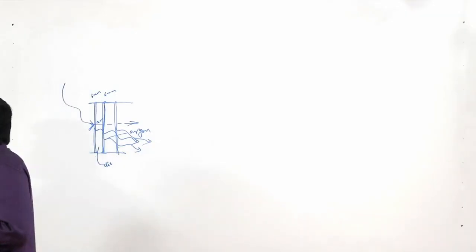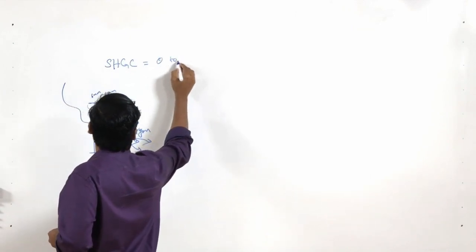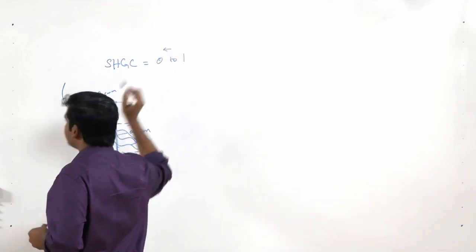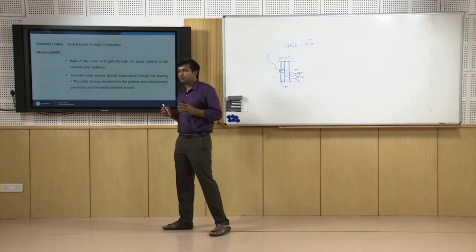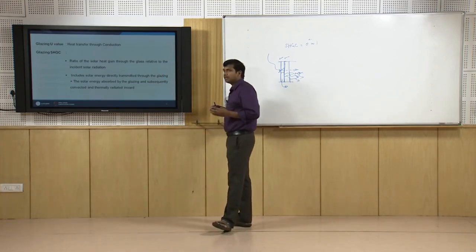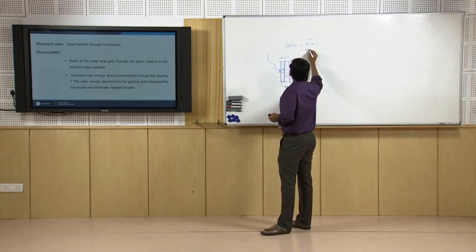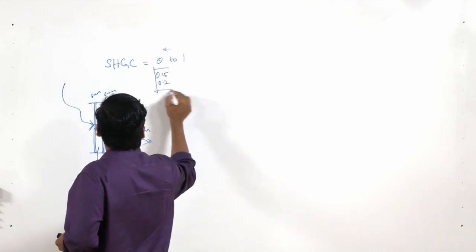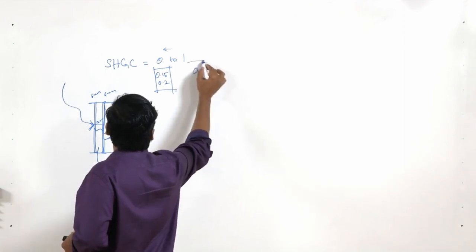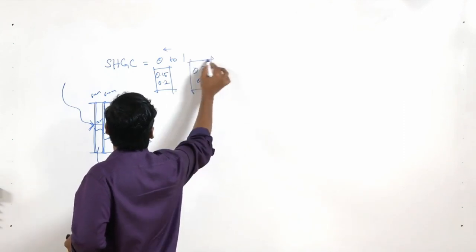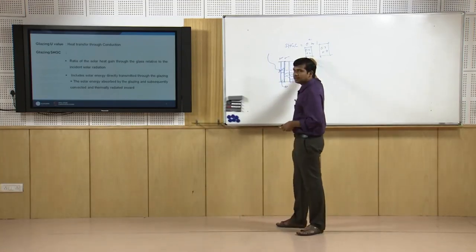Effectively this is expressed using SHGC or solar heat gain coefficient, ranging from 0 to 1. The closer to 0, the more efficient the glazing system. Highly efficient low-e (low emissive) glazing systems will have SHGC values closer to 0.15 or 0.25, whereas a single clear glazing system may have SHGC of 0.7 or 0.8, meaning more radiant heat is transmitted into the space.